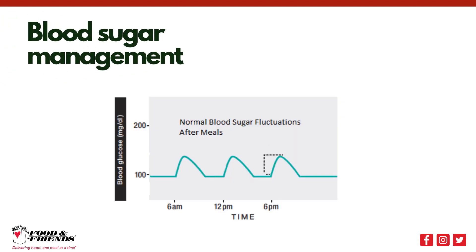When our body breaks down carbohydrates into sugars and absorbs them into the bloodstream, it is normal for blood sugar to rise after eating. Normally, this blood sugar will decrease as cells absorb these sugars for energy. For people with diabetes, the body's cells are unable to absorb the glucose, which means blood sugar may remain high after a meal — this is called hyperglycemia. If someone with diabetes eats too few carbohydrates, they may have too little glucose in their bloodstream, which is called hypoglycemia. Getting the right balance of carbohydrates is key for people with diabetes to prevent highs and lows.